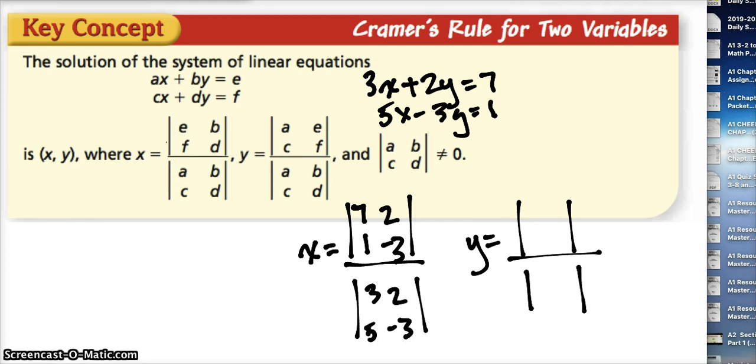The denominator is not the answer portion—it's A, B, C, D. So we're going to have 3, 2, 5, and negative 3. For the other denominator it's the same thing: 3, 2, 5, negative 3. And this numerator up here, because we're dealing with y, we'll ignore the y section and use A, E, C, F. So 3, 7, 5, 1.